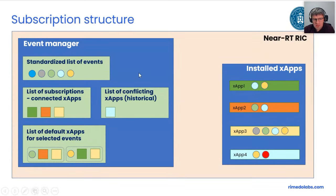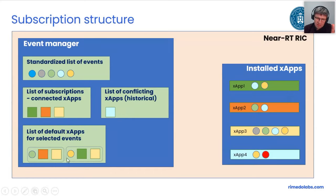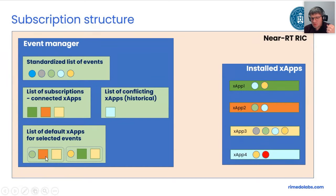In the event manager model, we could have a list of subscriptions for connected X-Apps. Applying the simple approach with a sticky list of events — if a green event appears, based on priorities, we may say the orange X-App handles it first; if not handled, it passes to the yellow one, or they can be handled in parallel. We could also create a risk list of conflicting X-Apps from the past and apply more sophisticated approaches. If the list of events is standardized, we could have dedicated conflict mitigation modules.